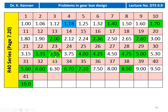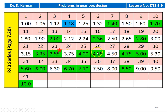Taking every fourth value starting from 35.5, the 18 speeds selected from the R40 series are: 35.5, 42.5, 50, 60, 71, 85, 100, 118, 140, 170, 200, 236, 280, 335, 400, 475, 560, and 670 RPM.